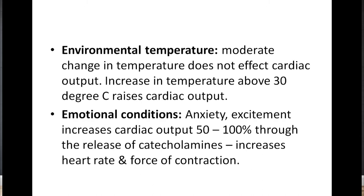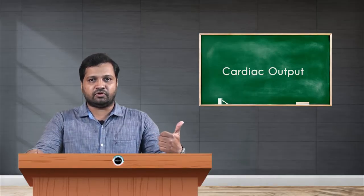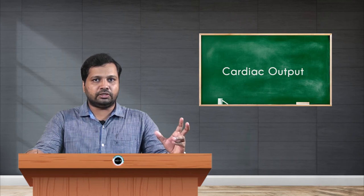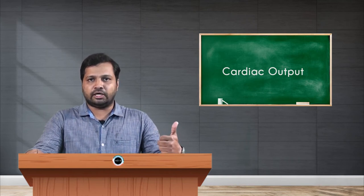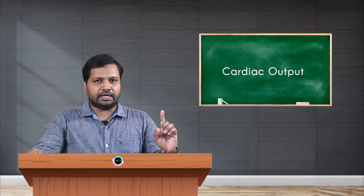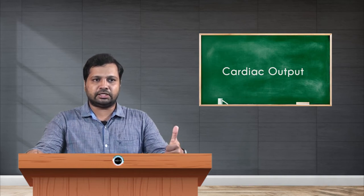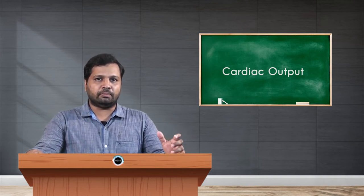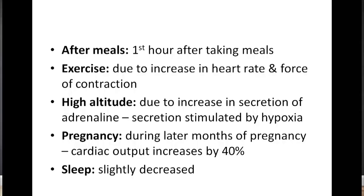The next factor is emotional condition. During anxiety, excitement, or anger, there is an increase in cardiac output of 50 to 100 percent, through the release of catecholamines. Catecholamines are stress hormones that increase heart rate and force of contraction, thereby increasing cardiac output.